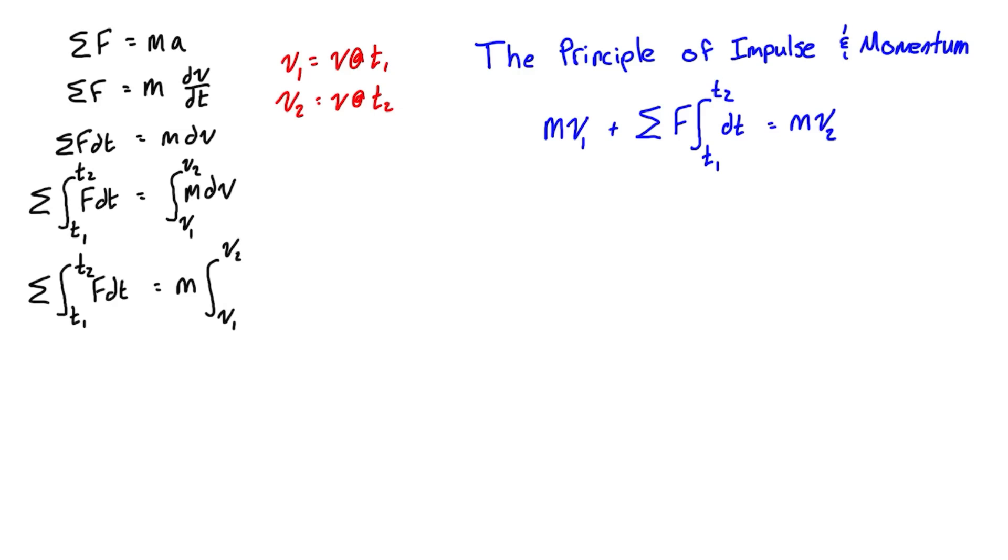We can just write that as the integral of dv. We're not going to touch the left hand side, and we can really easily evaluate the integral of dv from v1 to v2. It's just going to be mass times v2 minus v1.